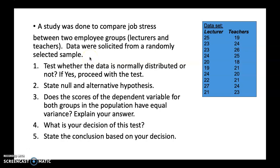When we want to run an independent sample T-test using SPSS, there are five steps. First, we need to test whether the data is normally distributed. Second, you need to state the null and alternative hypothesis. Third, does the scores of the dependent variable for both groups in the population have equal variance? Fourth, what is your decision for this test? And finally, you need to state the conclusion based on your decision.